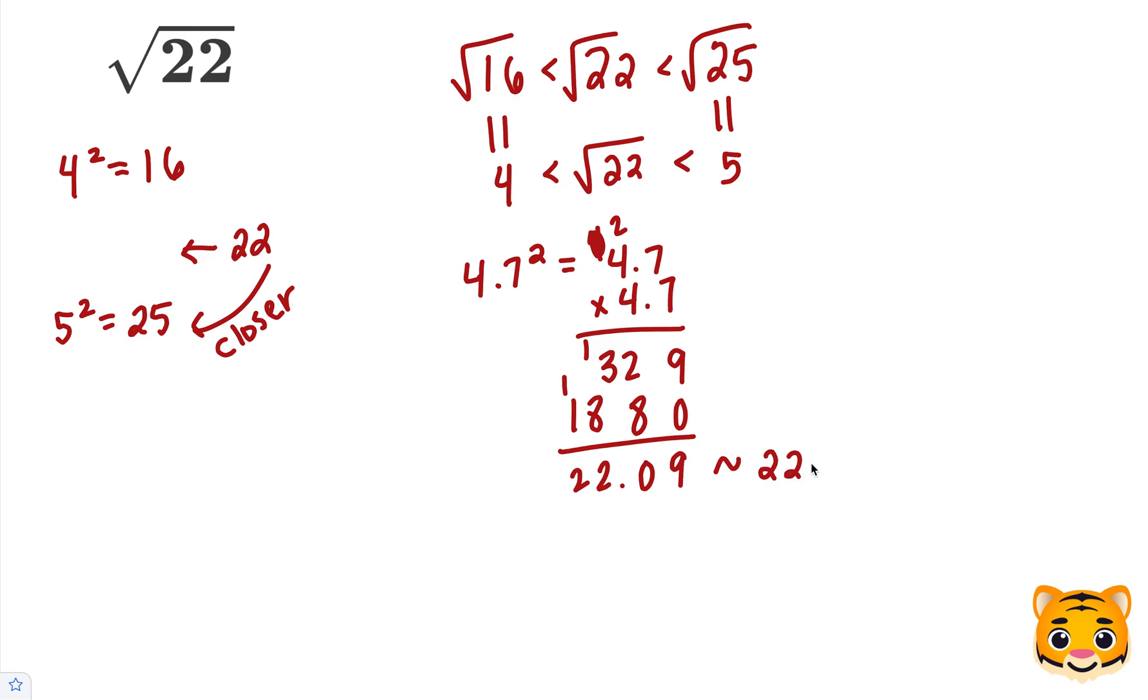This is very close and can be approximated to 22. So we can say that 4.7 squared is approximately 22.